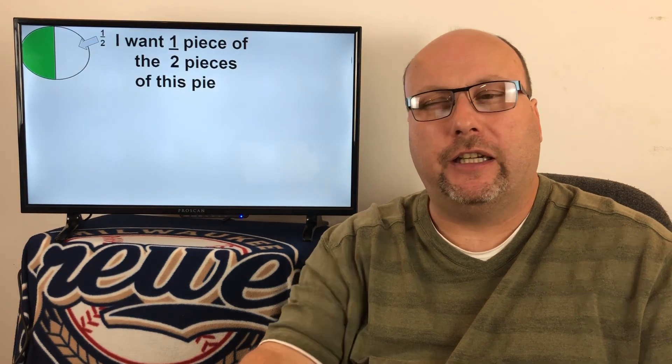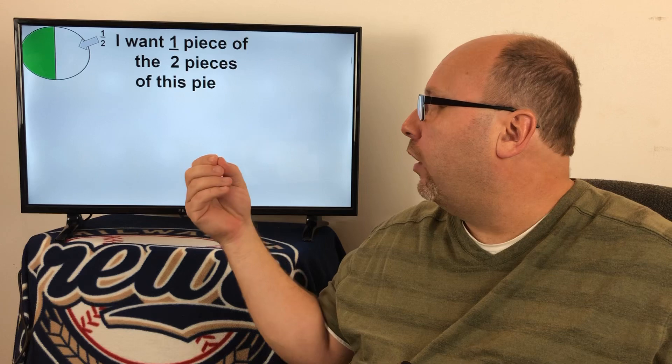Just to get you to better understand that, what would this fraction be? They're both equal, so I could say what portion is green. You would say, well, one portion is green out of the two that are available. One-half. If I put it in a real simple way, a sentence, I want one piece of the two pieces of this pie. Do you notice the fraction is right there? You can put that in a little sentence.